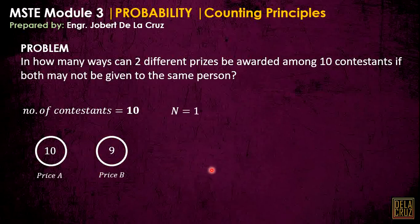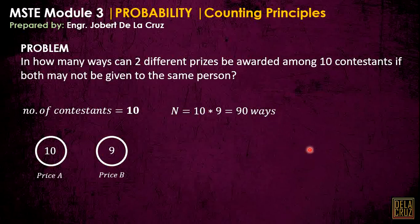So the total number of ways is ten times nine, which is 90. There are 90 possible ways these two prizes can be awarded within ten contestants.